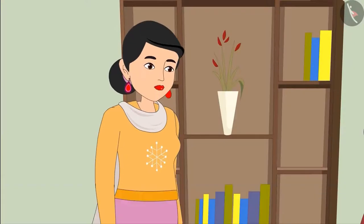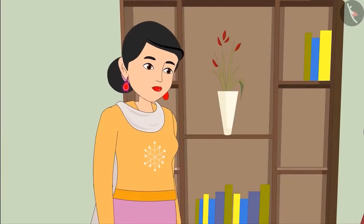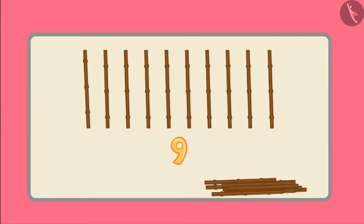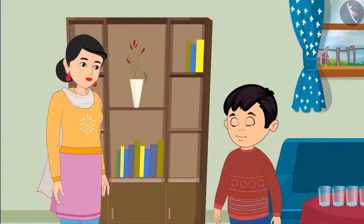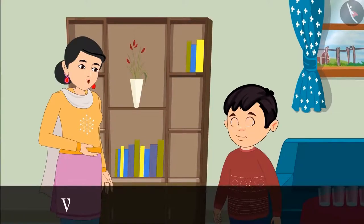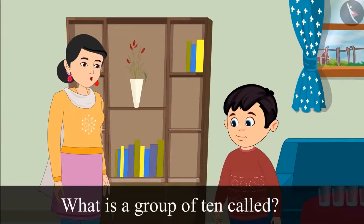Don't worry, Chotu. I will tell you how to count beyond 9. If we add one more wooden stick to 9 wooden sticks, then we get 10 wooden sticks. Do you know, Chotu, what any group of 10 is called?